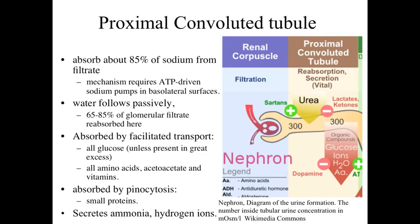Within the proximal convoluted tubule, about 85% of the sodium is reabsorbed via ATP-driven sodium pumps. Water follows passively, so about 65 to 85% of the glomerular filtrate is reabsorbed here following the salt pumped across. We also do facilitated transport of things like glucose, amino acids, acetoacetate, and vitamins. At the same time, waste materials like ammonia and hydrogen ions - acids building up in the body - are actively secreted into the filtrate, modifying the materials as they pass through.